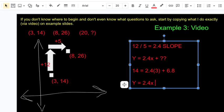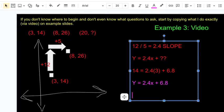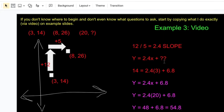Okay, if I want to use that now to find the value of y when x is 20, then we just go y equals 2.4 times 20 plus 6.8, which gives us 48 plus 6.8 equals 54.8. That's our question mark.